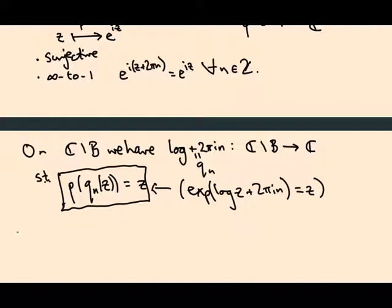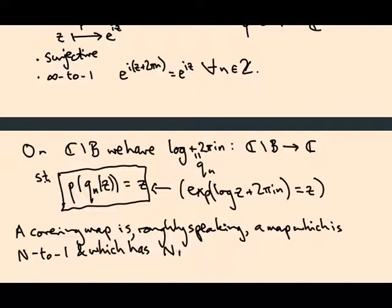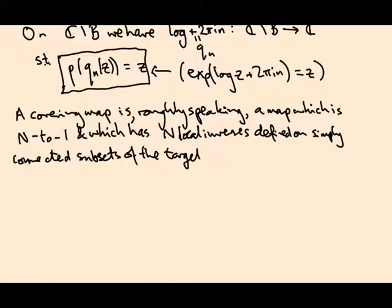Roughly speaking, a covering map is something like this: it's a map which is n-to-one for some n, possibly infinity, and it has n local inverses defined on simply connected subsets of the target.